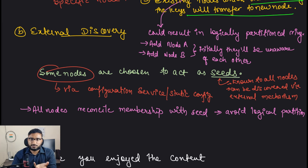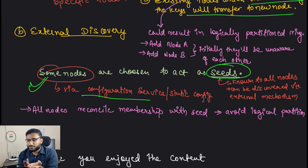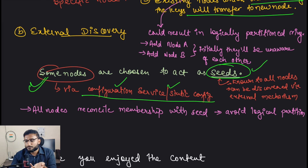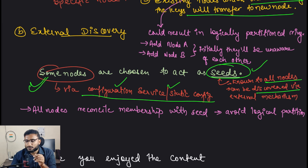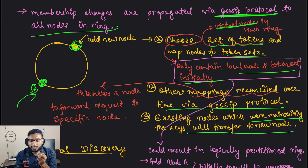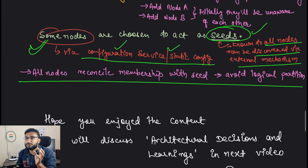To avoid this problem of logical partitions, some nodes are chosen as seeds. These seeds are chosen either via some static configuration or by interacting with a configuration service - two mechanisms mentioned in the paper. The seeds know the information of all other nodes and can be discovered by an external mechanism, so all nodes can reconcile their membership information from the seed nodes.